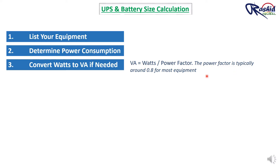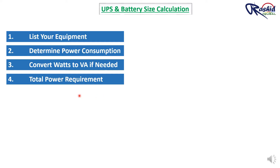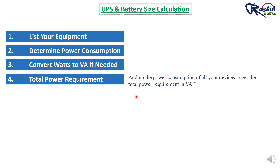Use the formula: VA equals Watts divided by power factor. The power factor is typically around 0.8 for most equipment, or you can select as per your requirement — it might be 0.9 or 0.85 depending on your design. Fourth, total power requirement: add up the power consumption of all your devices to get the total power requirement in VA.